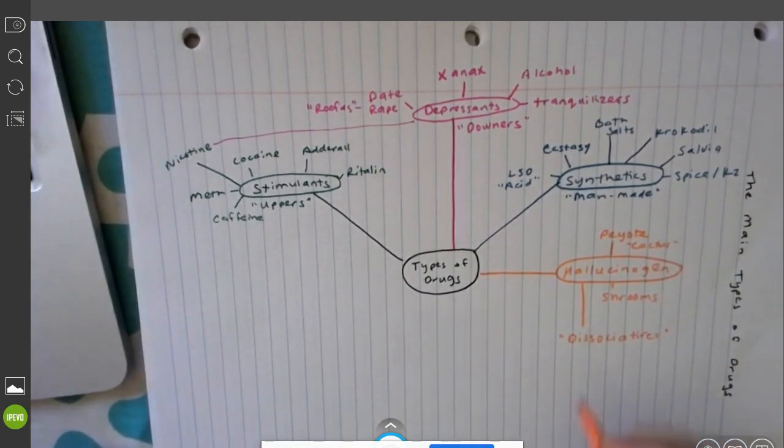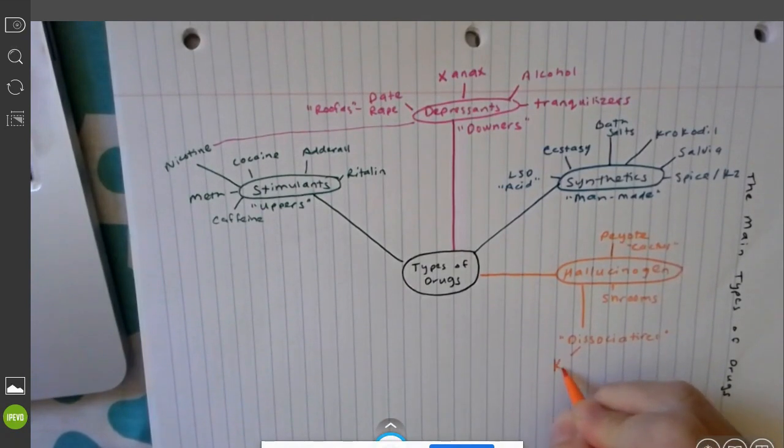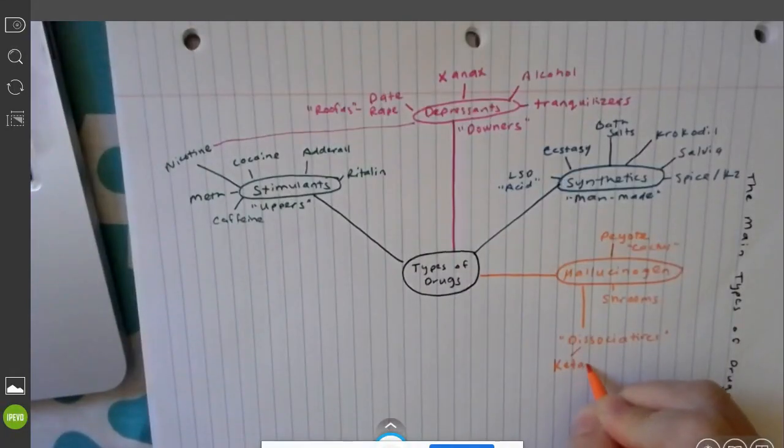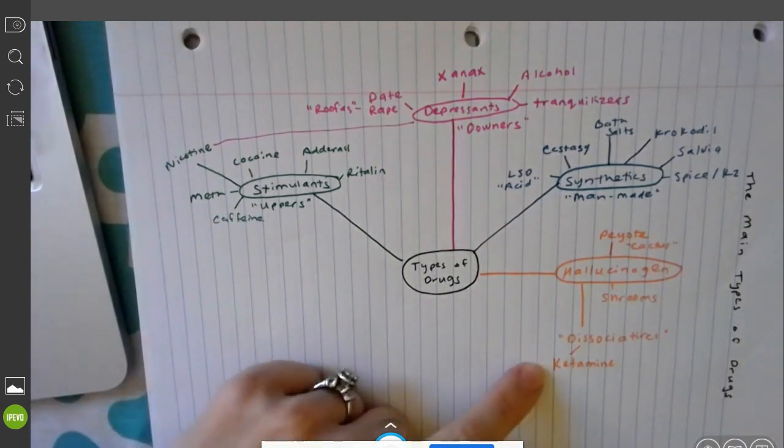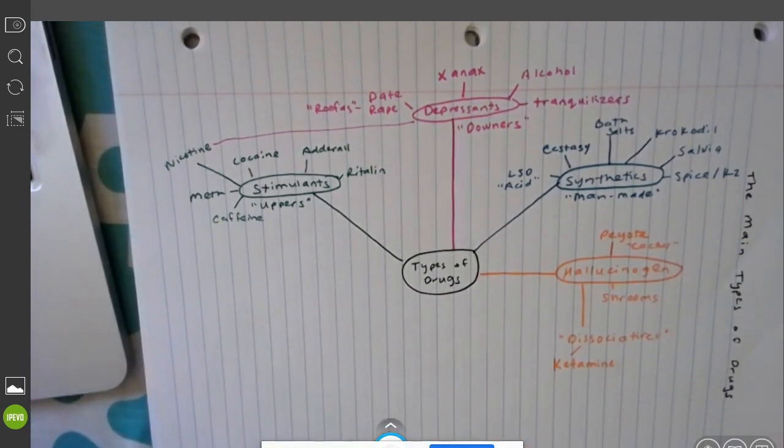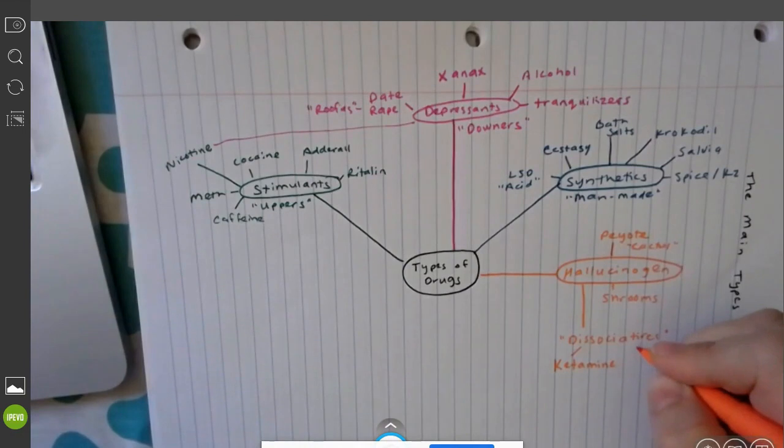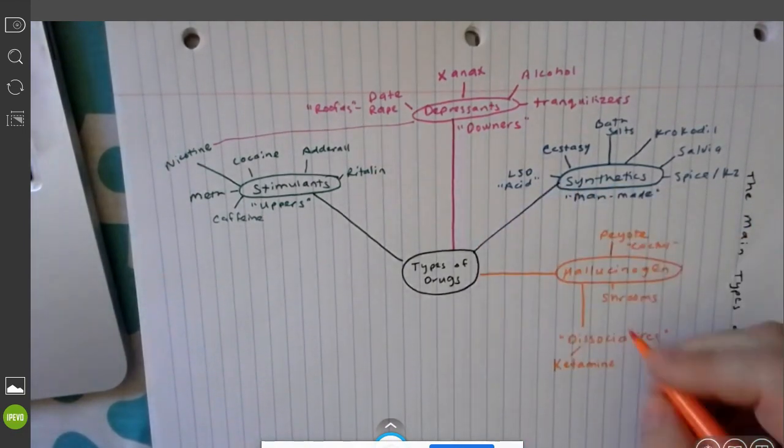This category of hallucinogens is going to be a sub one called dissociatives. Some dissociative drugs would be special K or ketamine. This is what they use to put some animals under for surgery. It puts them in a surgical state. So it's like you are putting yourself in an anesthetic state like you would prior to surgery. The person has a little high before they pass out and then they go into that state where they're looking down on their body.